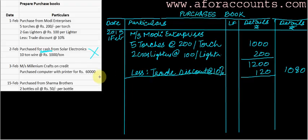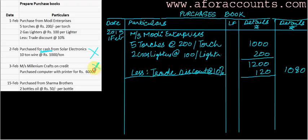3rd February: from MS Millennium Crafts, on credit, purchased a computer with printer for Rs. 60,000. Now, I am not dealing with computers and printers — this is not my stock. Computers and printers are fixed assets for me. Do I record fixed assets in my purchase book? No. I record only the items I deal with daily in my purchase book. I cannot enter the purchase of an asset in my purchase book — it is not my day-to-day business to buy computers and printers.